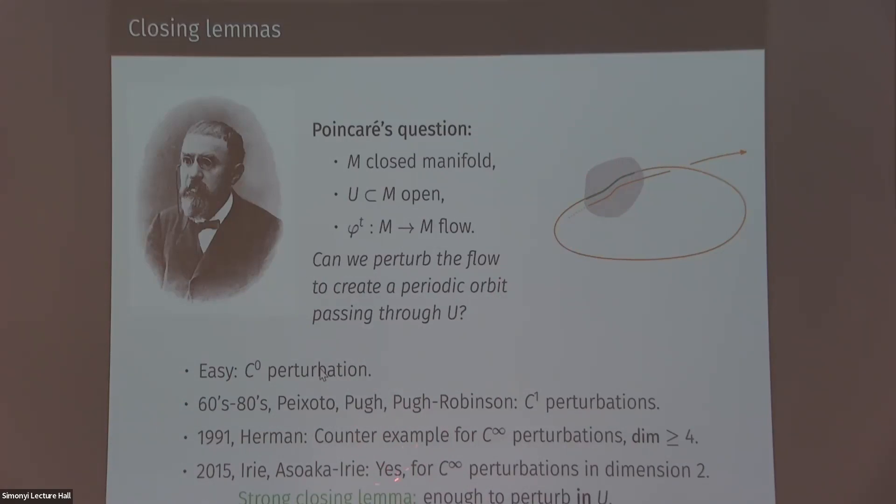This list kind of makes it look like the C infinity question of the closing lemmas is closed. But that's not really the case. So Herman writes in his paper that basically his examples are weird. So his examples are not weird as smooth manifolds. They're just even dimensional tori. But as symplectic manifolds, they are very weird. They're not quotient of the R^2N that I showed you in the second slide. So basically, he asks in the paper whether this closing property holds for more sane symplectic manifolds.